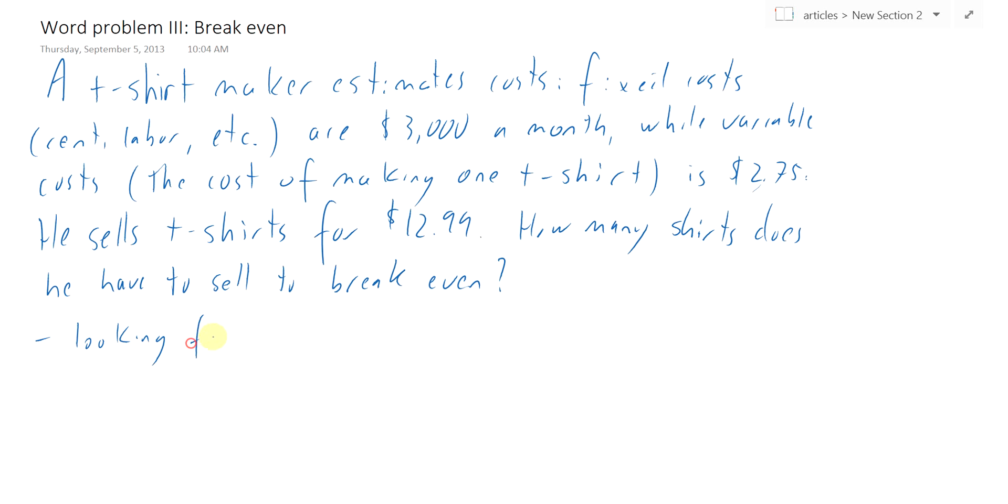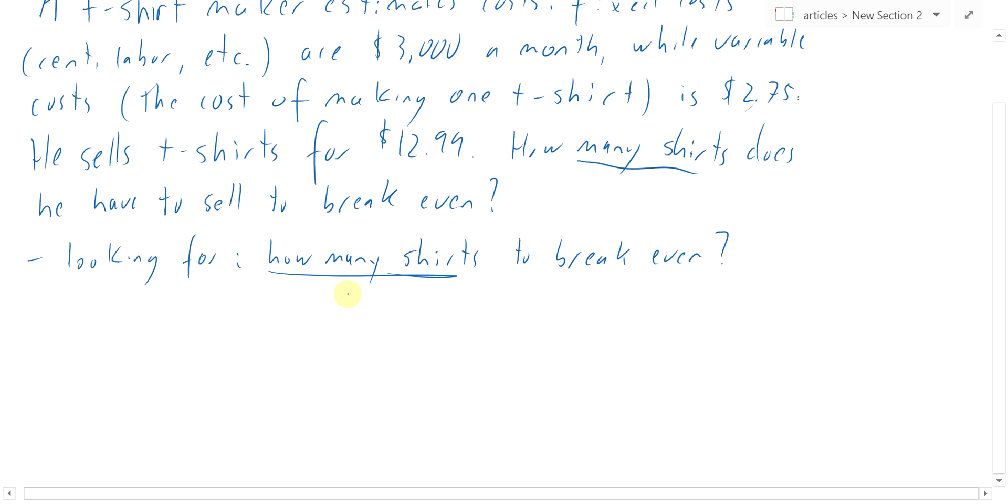Again, it's in the statement with a question mark, usually. How many shirts to break even? And that's our question mark. So how many shirts, that's what we're looking for. So give it a name, we'll call this x. So x is the number of shirts that he has to make to break even.